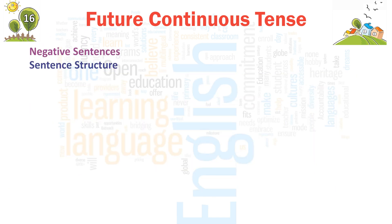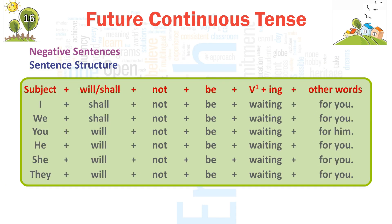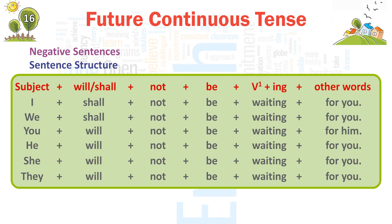Negative Sentences. Sentence Structure: Subject + will/shall + not + be + verb(-ing) + other words. Example: I + shall + not + be + waiting + for you. → 'I shall not be waiting for you.'